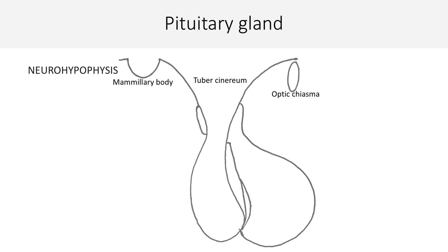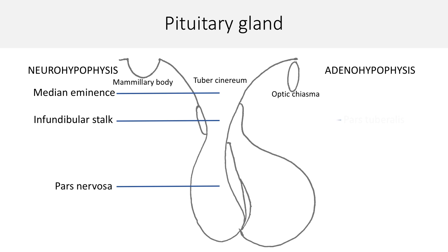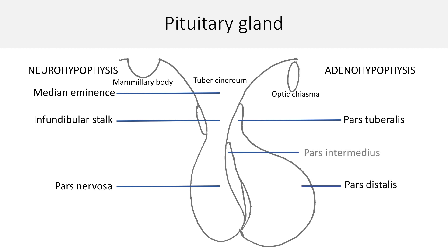Neurohypophysis includes median eminence, infundibular stalk, and pars nervosa. Adenohypophysis includes pars tuberalis, pars distalis, and pars intermedius.